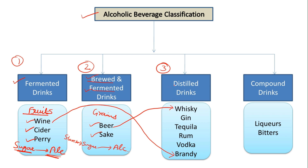So distilled drinks are distilled and are called spirits. These spirits include whiskey, gin, tequila, rum, vodka, and brandy — all of these are distilled drinks. Then the fourth category is compound drinks.